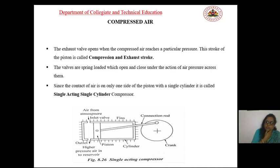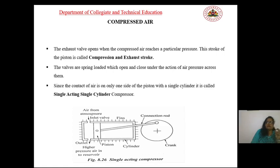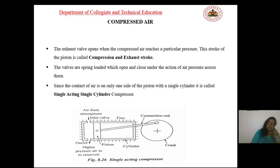The valves are spring-loaded, opening and closing by the action of air pressure across them. Since air contacts only one side of the piston, the cylinder is called a single-acting cylinder. During the extension stroke, air from the atmosphere enters and pushes the piston from cap end to rod end. For the retraction stroke, the force is provided by gravity or a spring load — hence the name single-acting cylinder, as air acts only on one side.